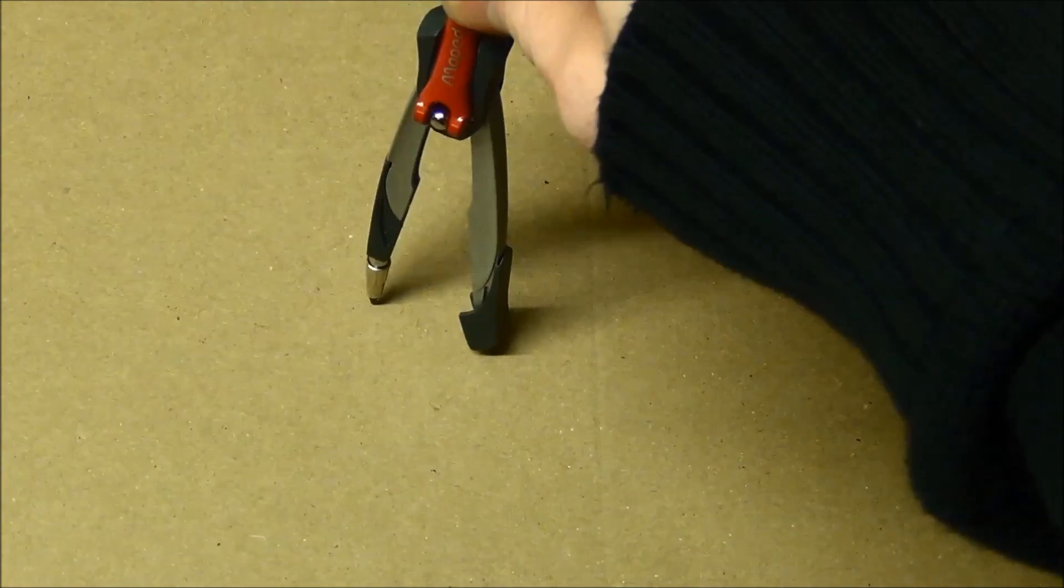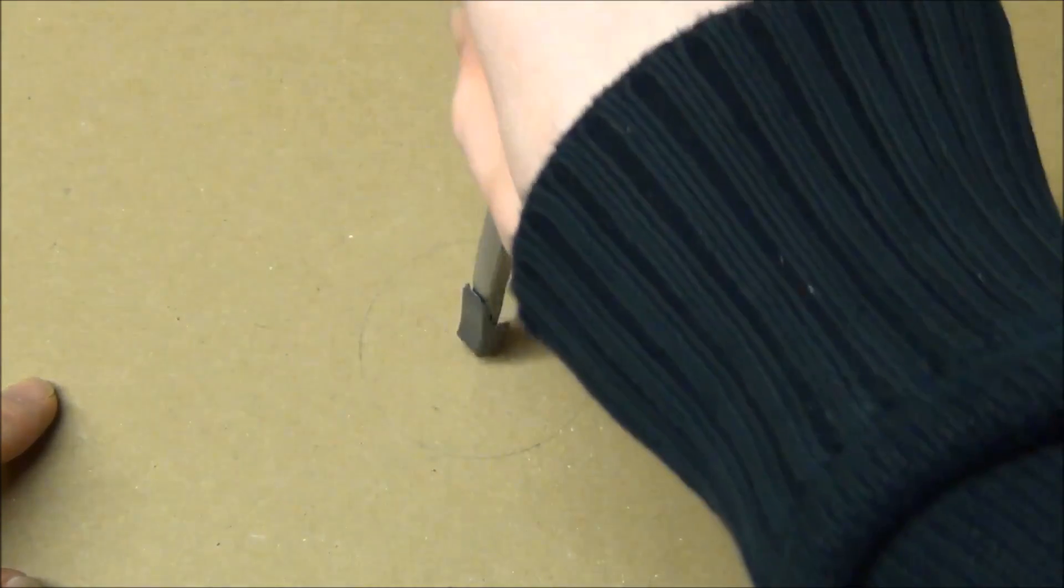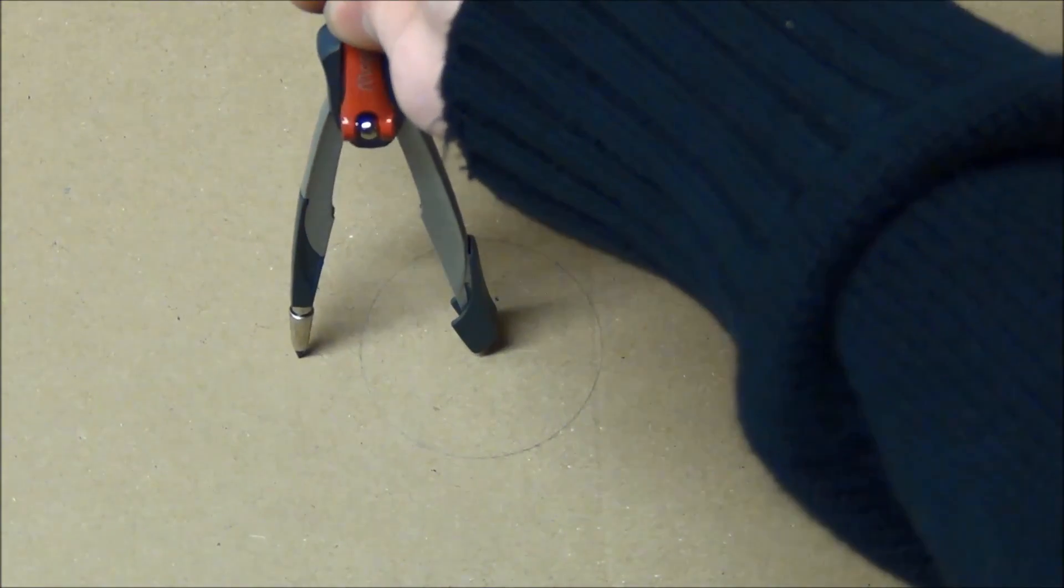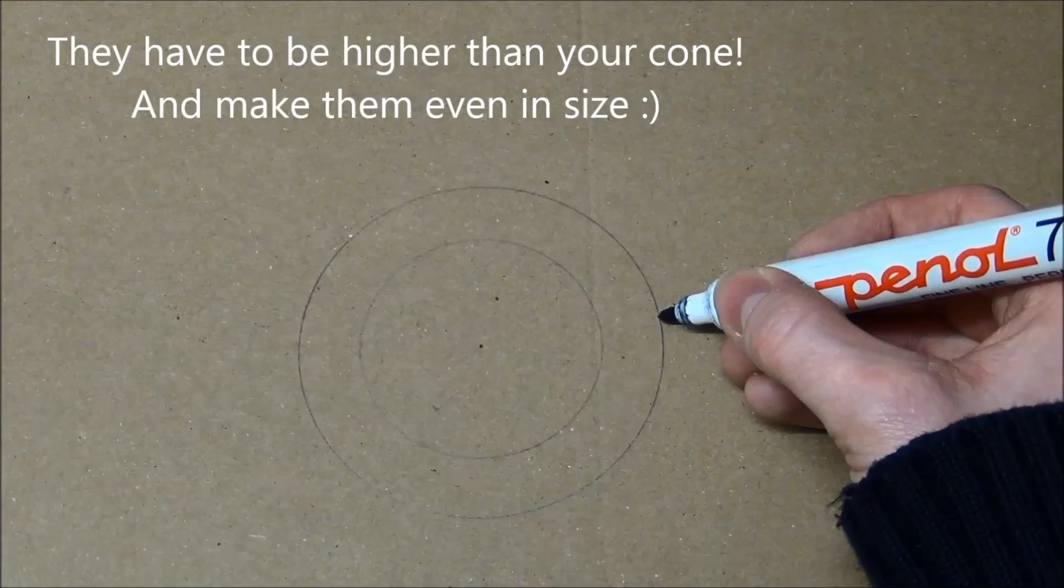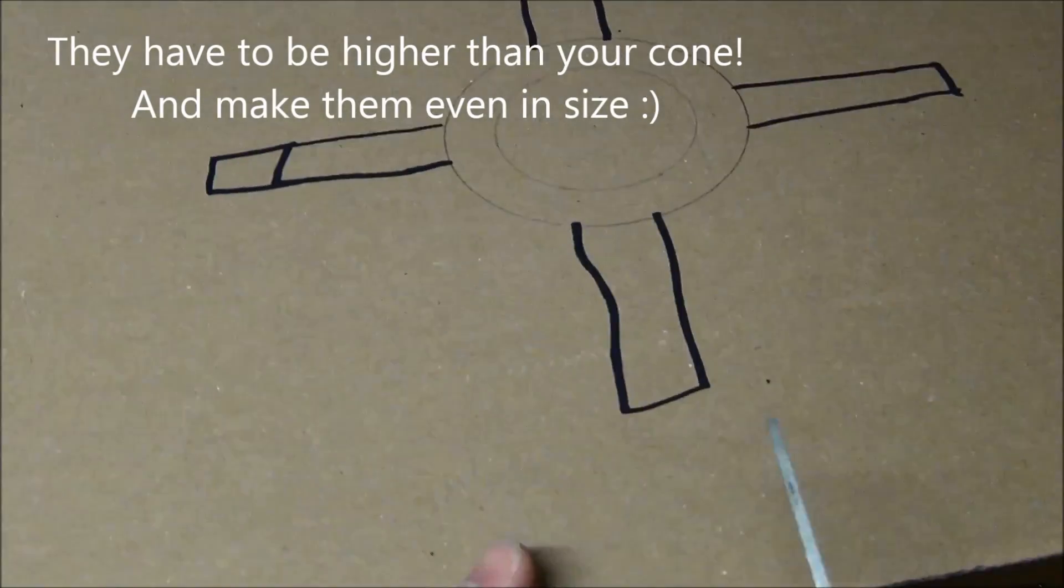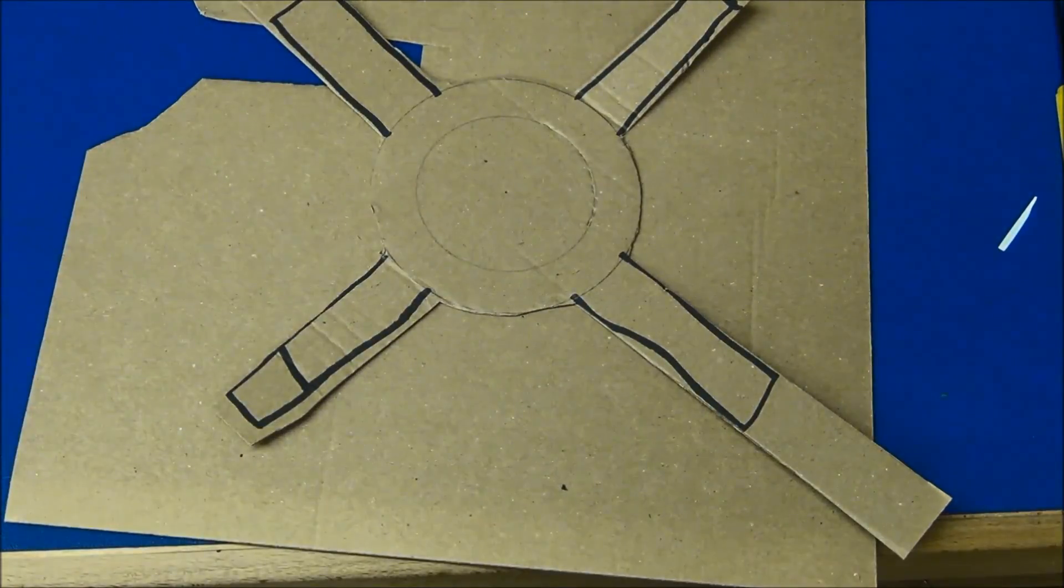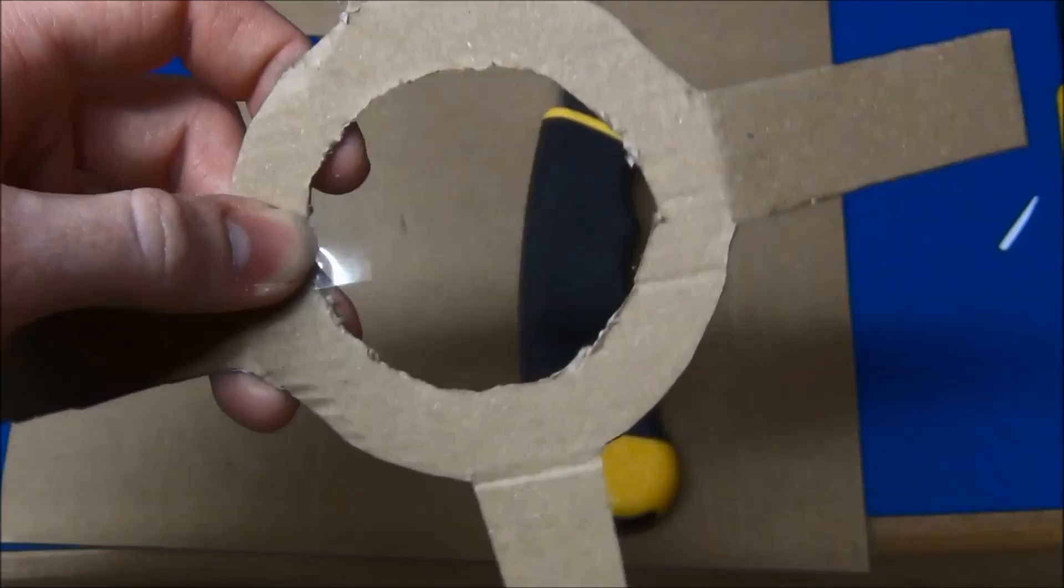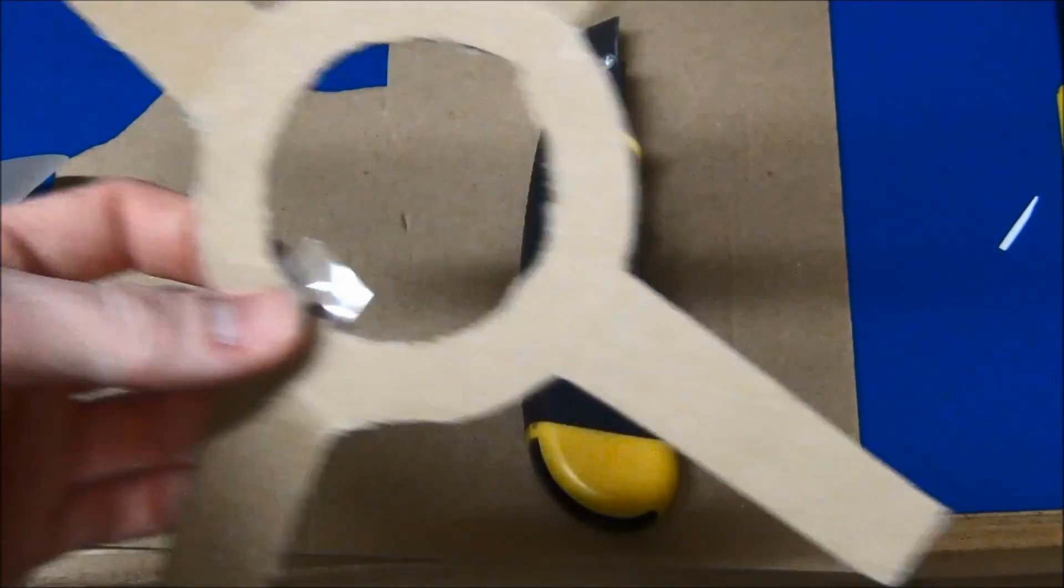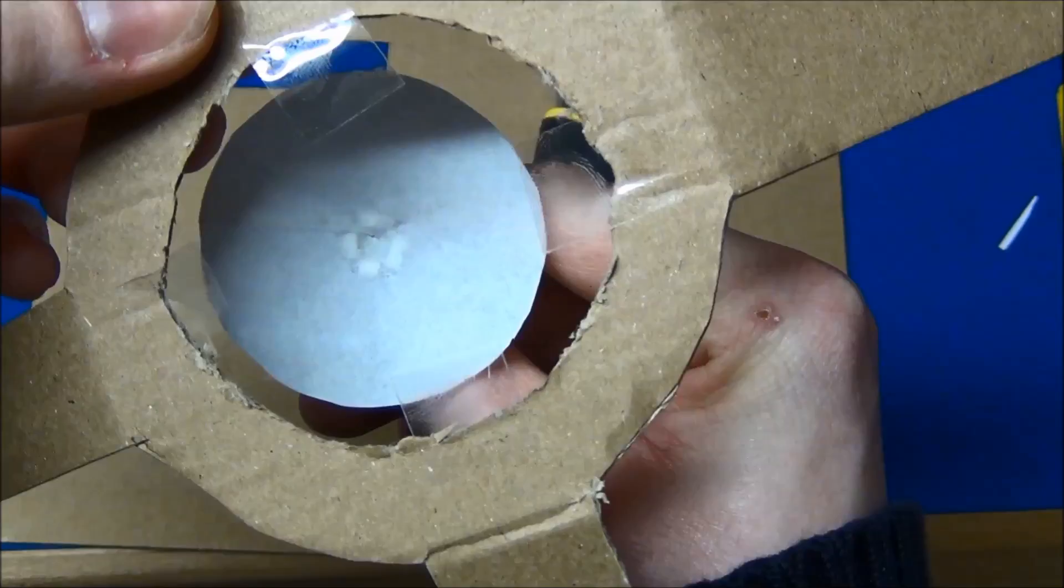Now to make the frame. Draw a circle the same size as you used for the cone on a piece of cardboard. Increase the radius about one centimeter to one and a half centimeter and draw a new circle. And give it four legs. Now add four small pieces of tape to the frame, evenly spaced. And attach the cone about in the middle.